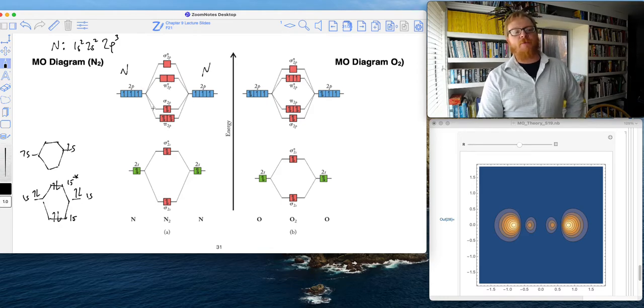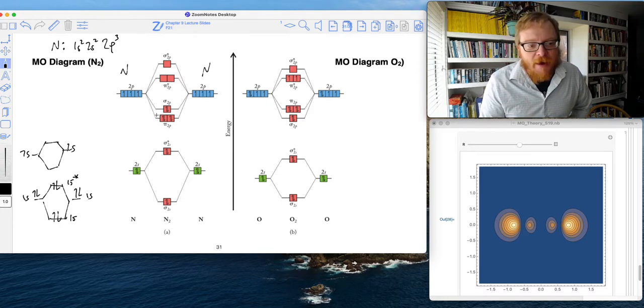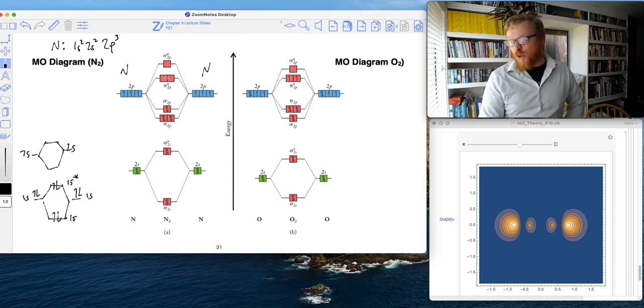So the way that this diagram works now, when we go to this 2P level, notice that we have to make four bonds in total, or four, I should say, excuse me, four molecular orbitals.